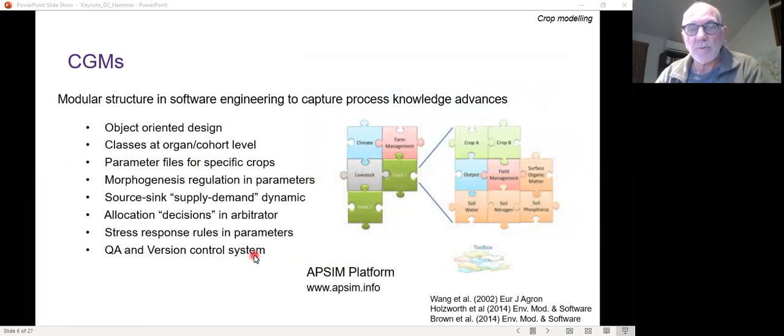Now in APSIM, I think you're probably all a bit aware of the APSIM platform. We've got a really comprehensive modular structure, well engineered and good software engineering team that have put this together in a way that it's object oriented. We've got classes that operate at organ or cohort of organs level. You can parameterize specific crops. You've got parameters and processes that deal with morphogenesis, source sink interactions, allocation, partitioning decisions, and stress responses. And there's a very good quality assurance and version control system. So we've got a capacity to build a knowledge bank that grows and develops as the science improves.